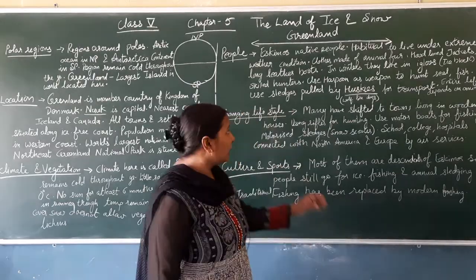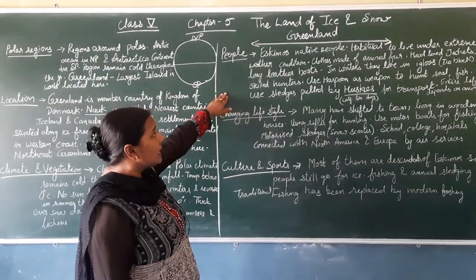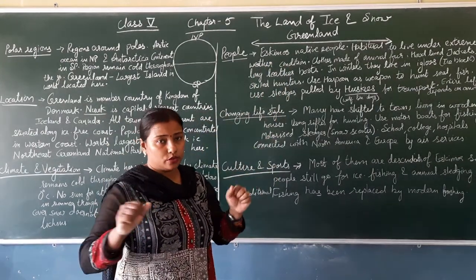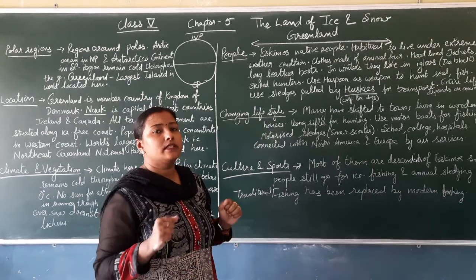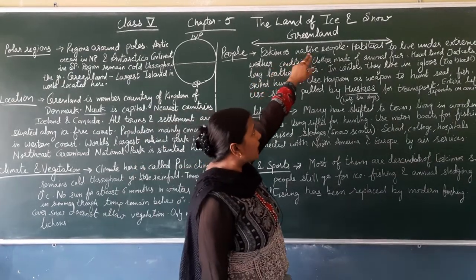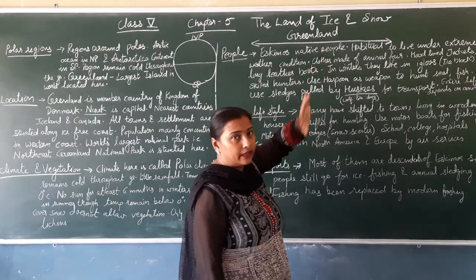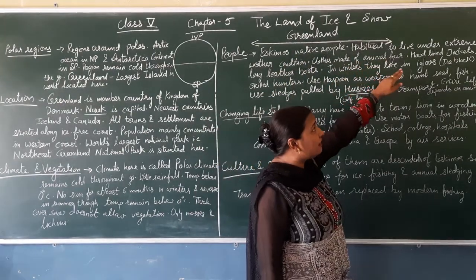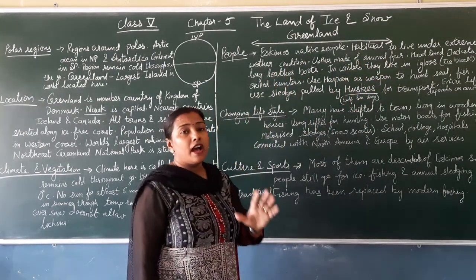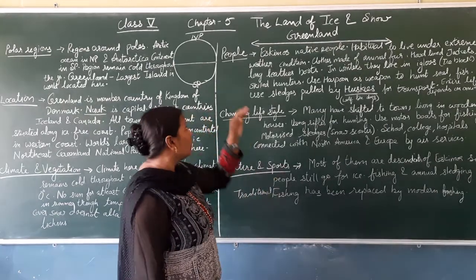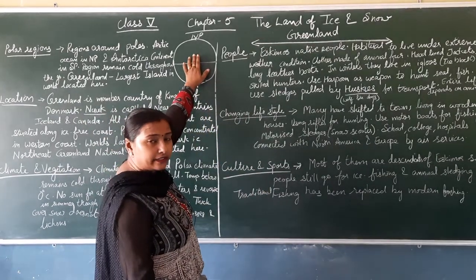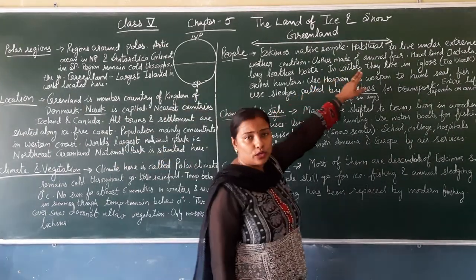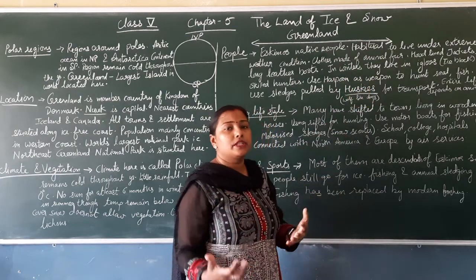Now let's talk about people. The people here are mostly Eskimos — people who wear a lot of warm clothes and can protect themselves. They live in igloos. Eskimos are the native people who live there. They are habitual to living under extreme weather conditions — below zero degree temperatures all 12 months. They are completely habituated to these harsh conditions.